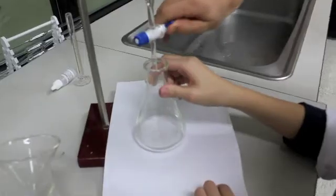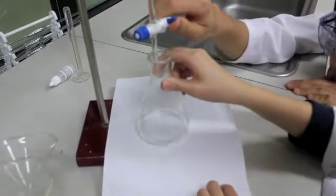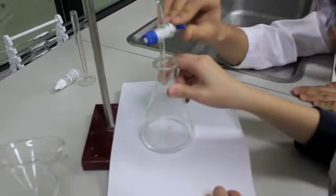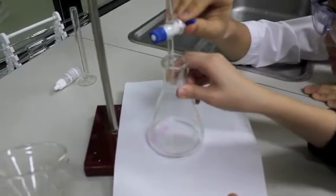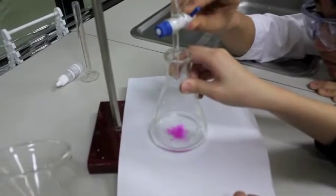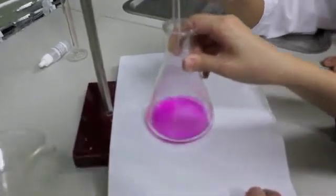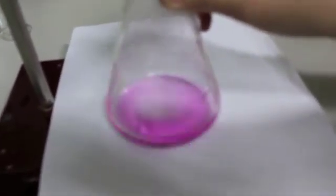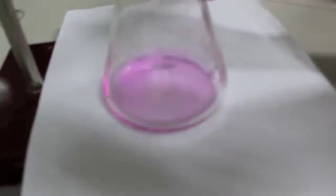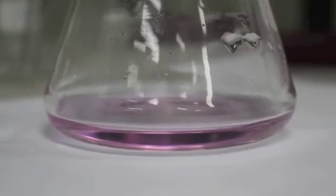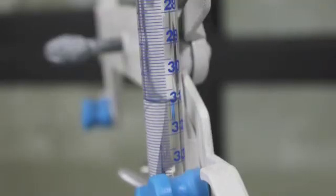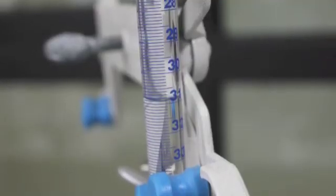Note the initial point. Here is the point where the endpoint has been reached, when the color is completely changed. Note the meniscus at this point as your final volume. Remember not to go beyond the 50 point as accurate measurements cannot be made.